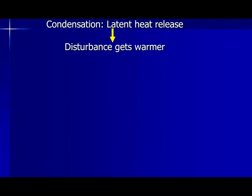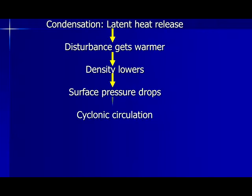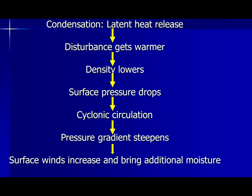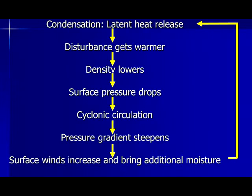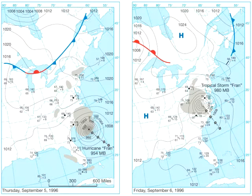Here is what happens when a system intensifies: condensation releases latent heat, the disturbance gets warmer, the density lowers, the surface pressure drops, we get cyclonic circulation, the pressure gradient steepens, surface winds increase and bring additional moisture, and then more latent heat is released — closing the loop. Given that hurricanes need a constant supply of warm, moist air, they will decay whenever they move over colder ocean currents, move onto land, or reach a location where the airflow aloft is unfavorable.